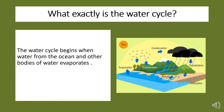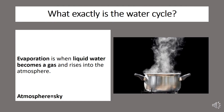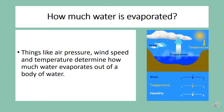The water cycle begins when water from the ocean and other bodies of water evaporates. Evaporation is when liquid water becomes a gas and rises into the atmosphere. Things like air pressure, wind speed, and temperature determine how much water evaporates out of a body of water.